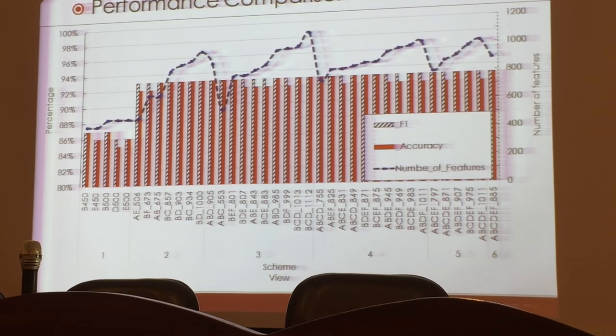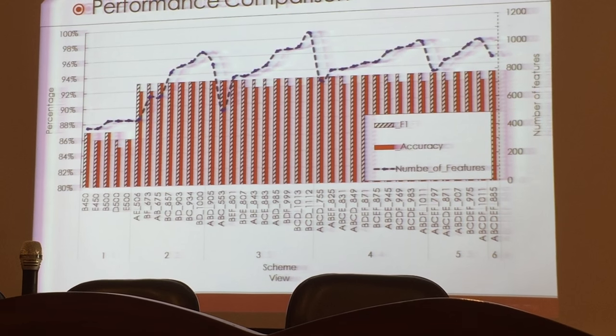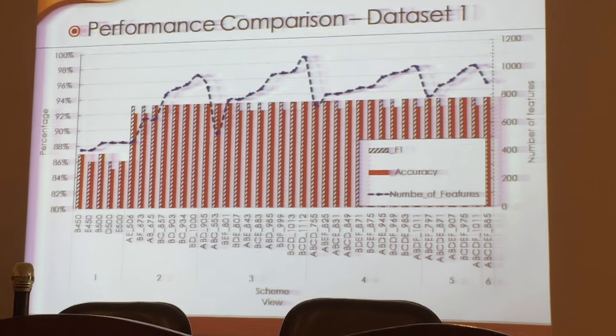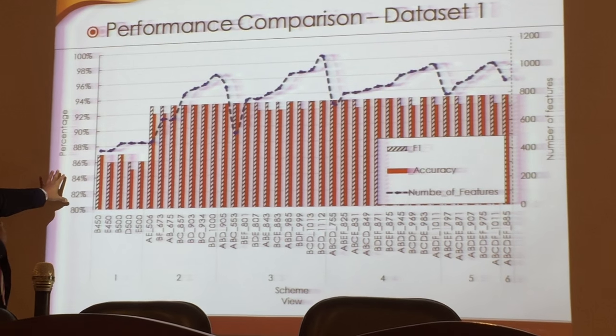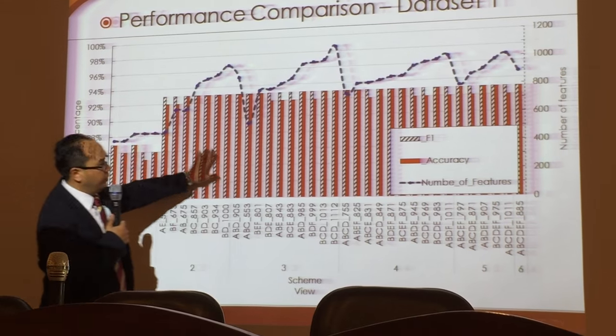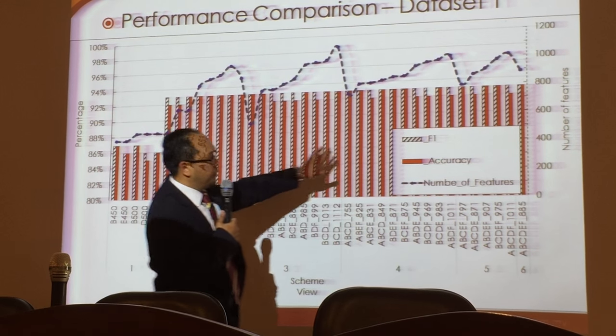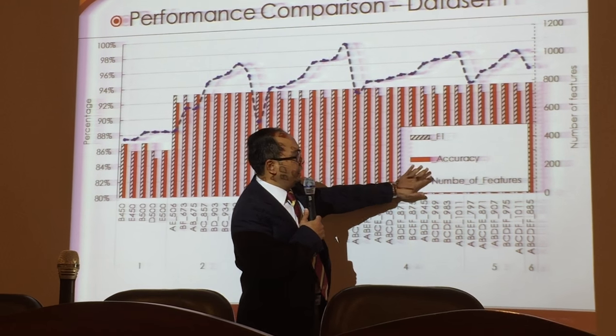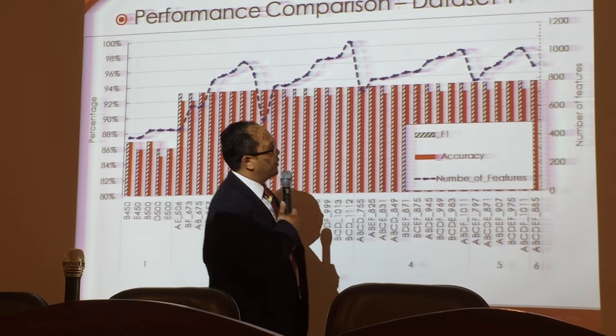These are the results on different datasets. For the first dataset of 107,000 samples, these are the F1 accuracy scores and numbers of features.